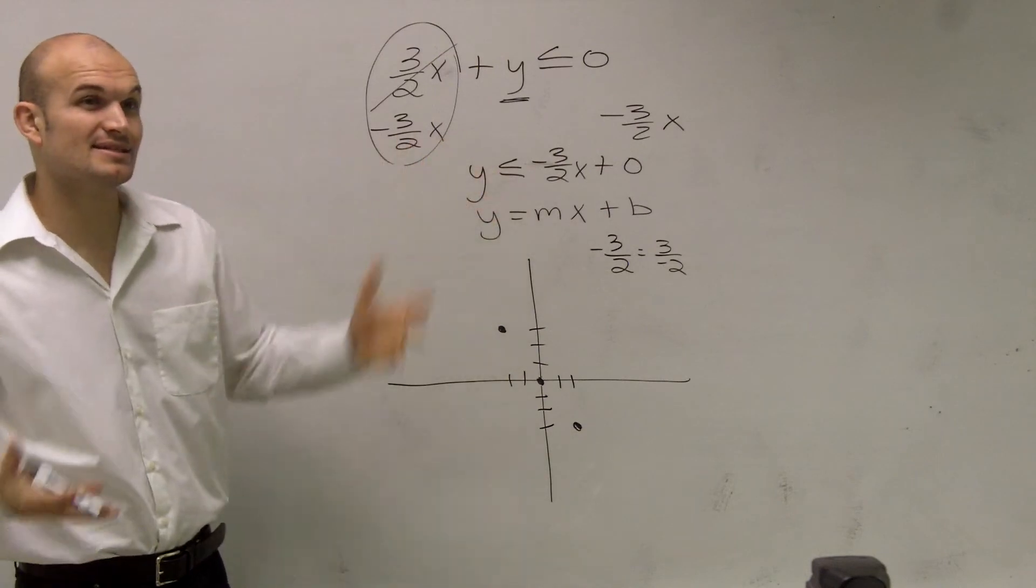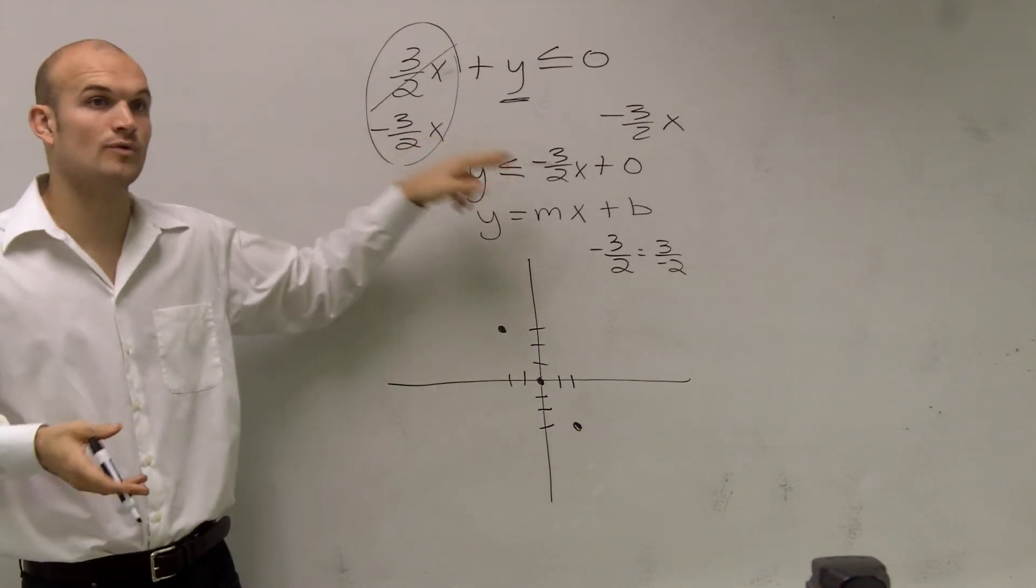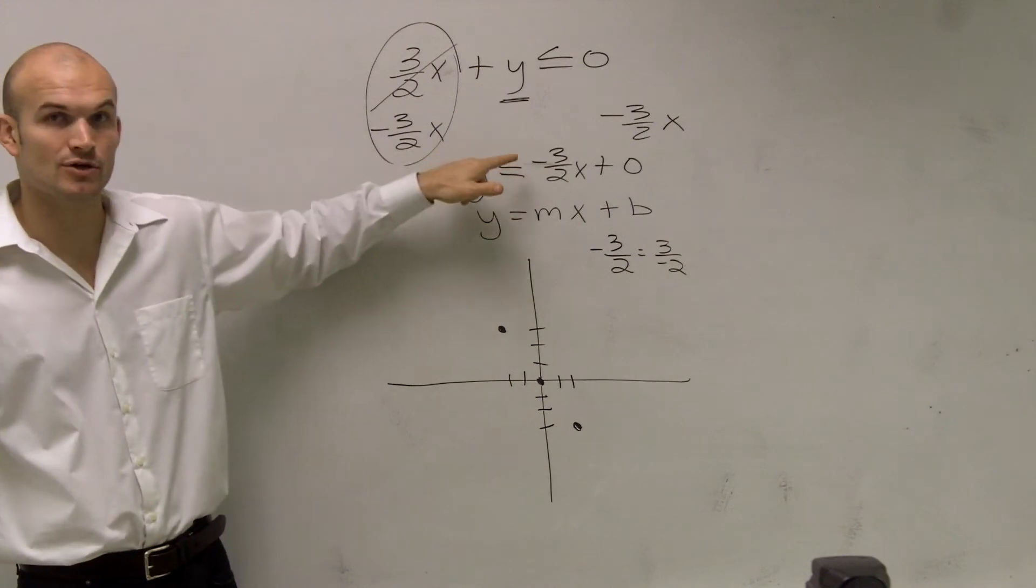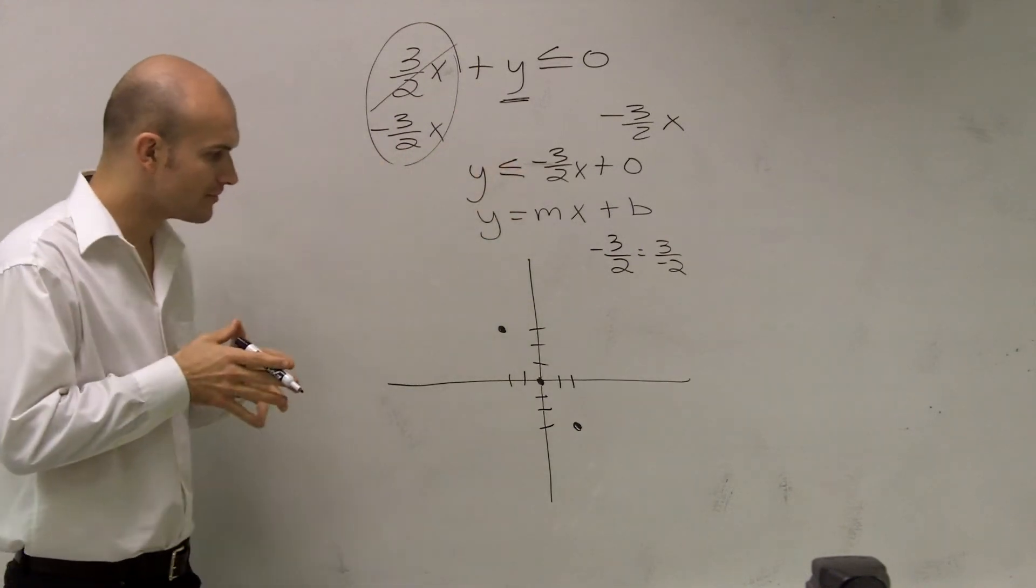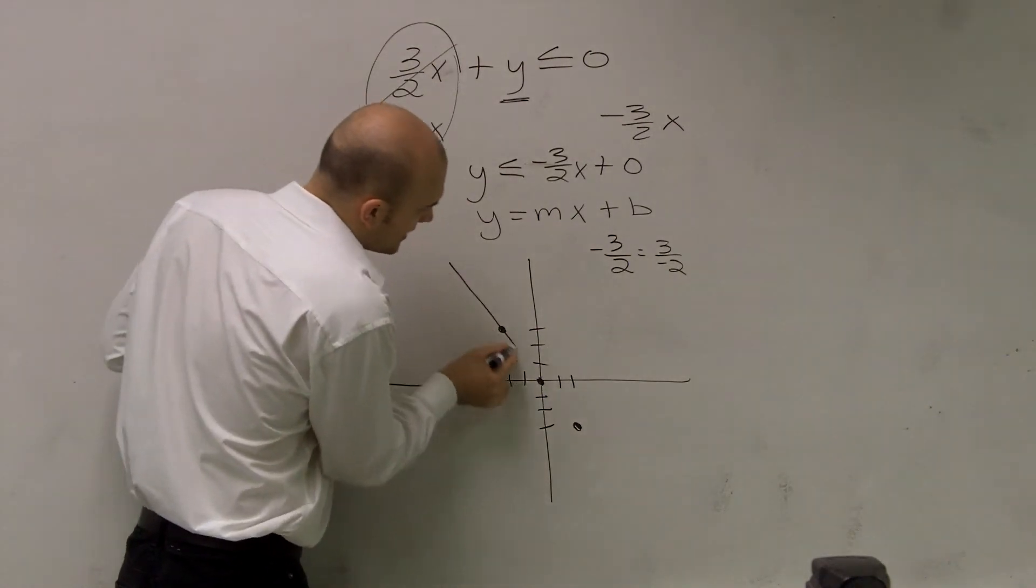Then I look at it and I determine is this going to be a solid or a dashed line. Remember, whenever it's less than or equal to or greater than or equal to, the equal to tells you that our line is going to be a part of our solution. So it's going to be a solid line.